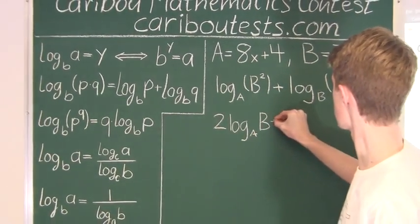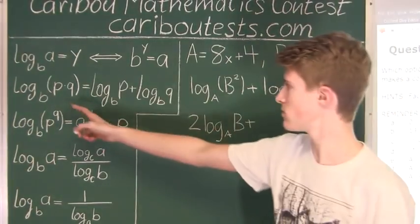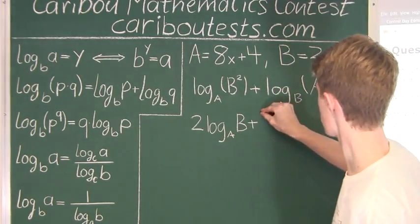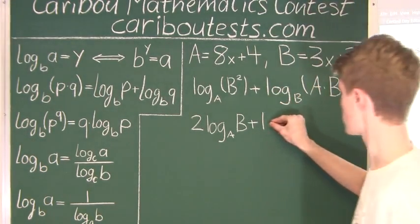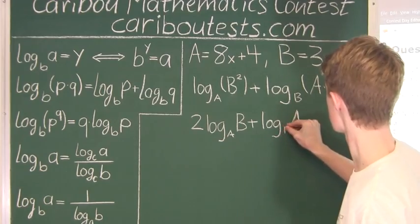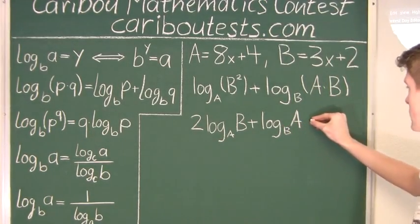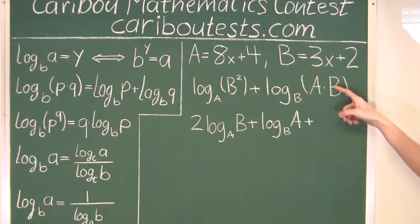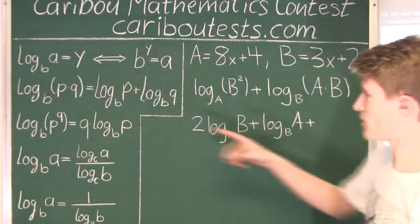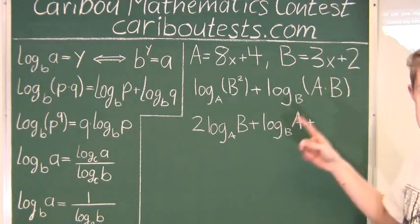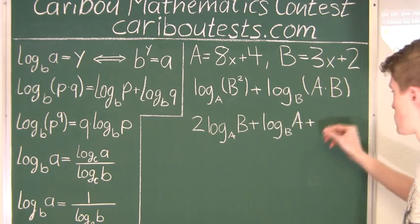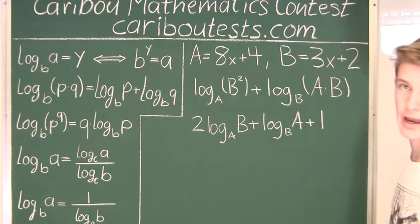For the second term, we have log(A × B) base B. Using the product rule, this expands to log A base B plus log B base B. Since log B base B equals 1 (because B to the power of 1 equals B), we write that as plus 1. The full equation equals 4.